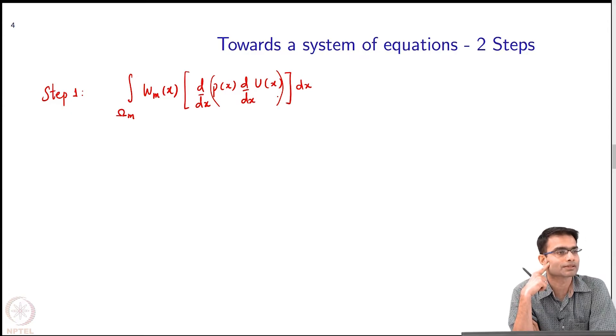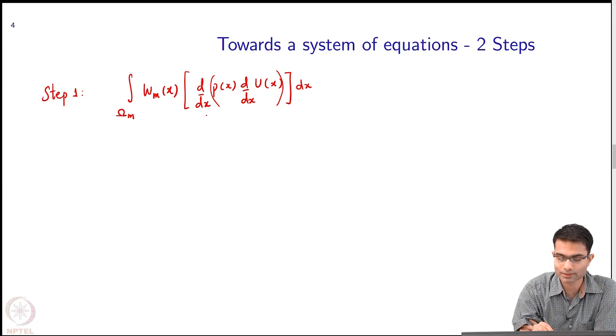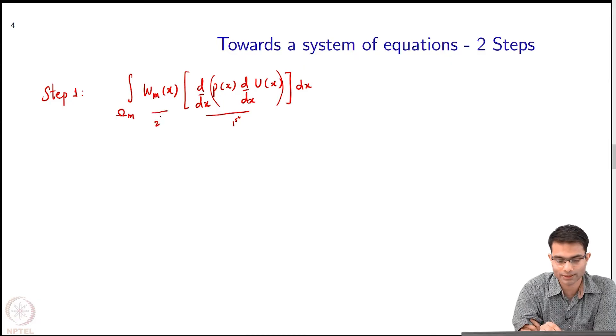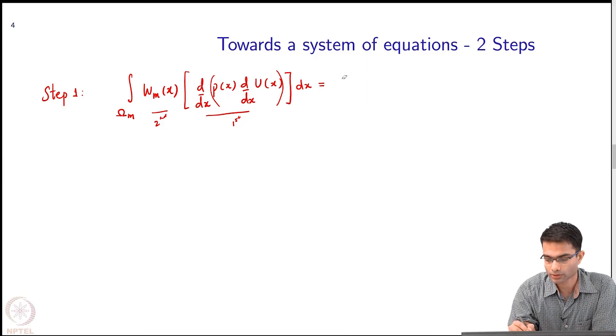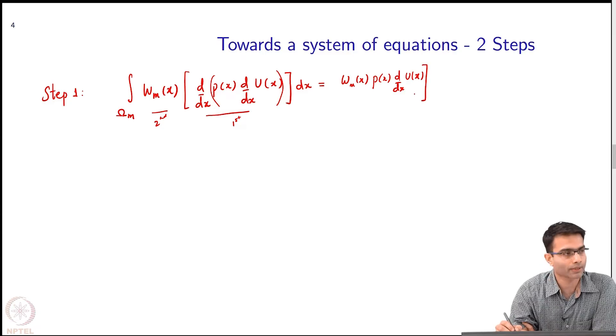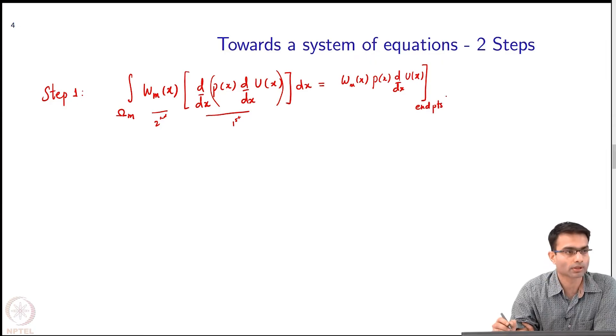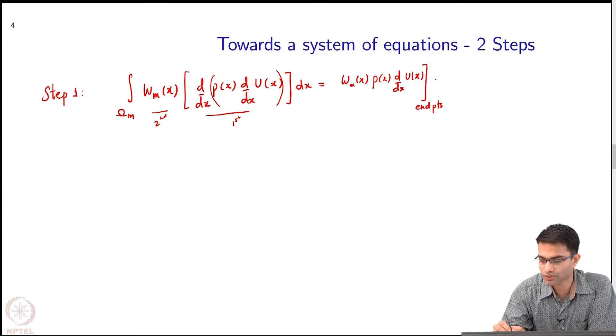What about integration by parts? If I do integration by parts, I have to integrate one function and I already have the differential inside there. This seems to be tailor made for integration by parts with this guy as the first function and this guy as the second. What happens to this term? The first term will simply become: W remains as it is, this becomes p(x) d/dx of u(x) evaluated at the end points. I will just write end points, the limits of integration basically.